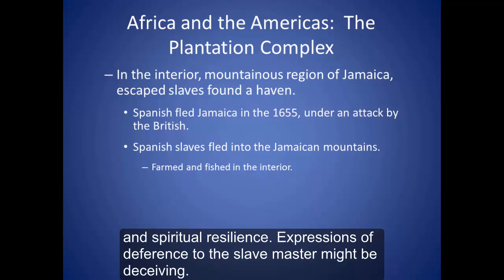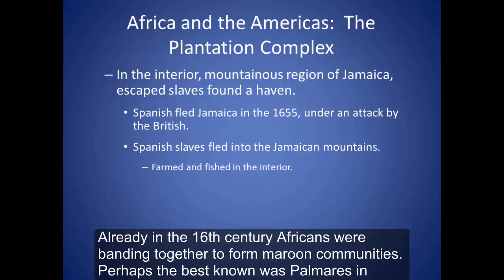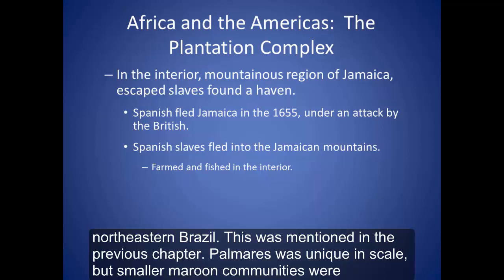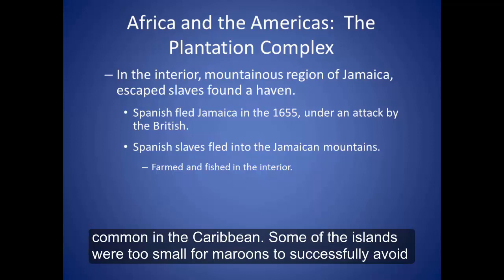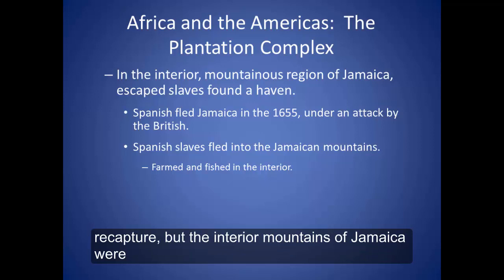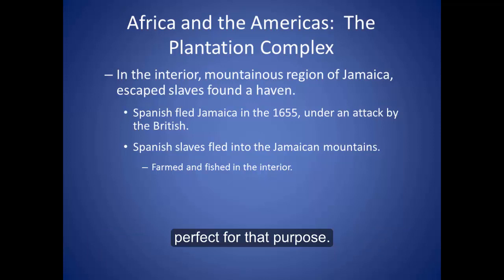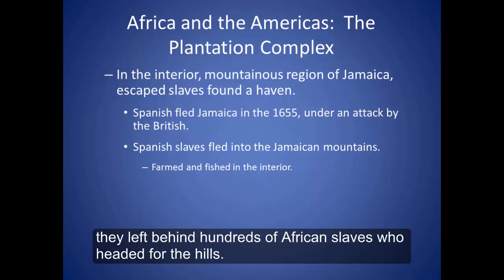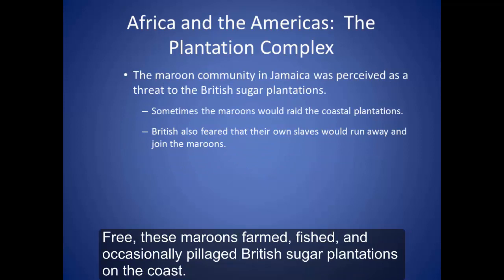Expressions of deference to the slave master might be deceiving. Already in the 16th century, Africans were banding together to form maroon communities. Perhaps the best known was Palmares in northeastern Brazil. Palmares was unique in scale, but smaller maroon communities were common in the Caribbean. Some of the islands were too small for maroons to successfully avoid recapture, but the interior mountains of Jamaica were perfect for that purpose. When the Spanish fled Jamaica in 1655 during a British attack, they left behind hundreds of African slaves who headed for the hills.